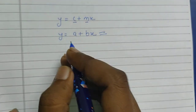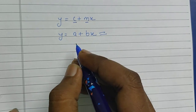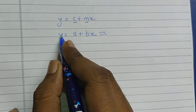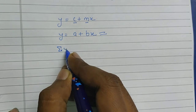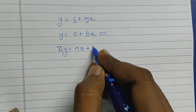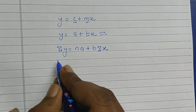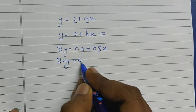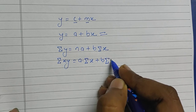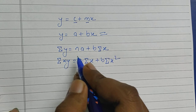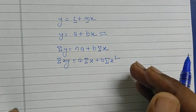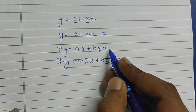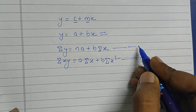Students, please try to understand this concept well because it is very helpful and not that difficult. We have y = a + bx, which we can write in summation form as: summation y = na + b·(summation x). Similarly, multiplying by x gives: summation xy = a·(summation x) + b·(summation x²). These two equations will be used for finding the equation of a straight line.